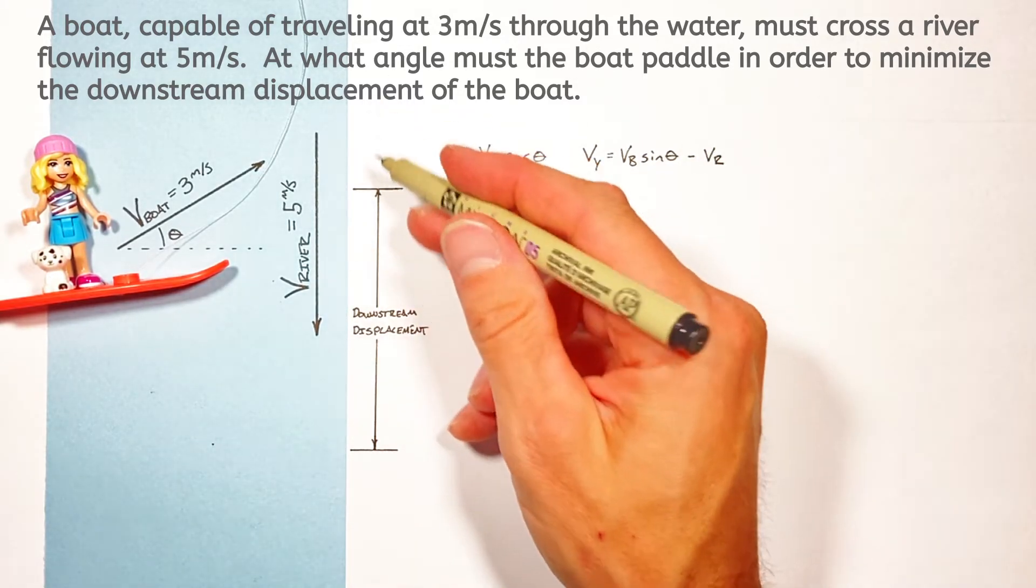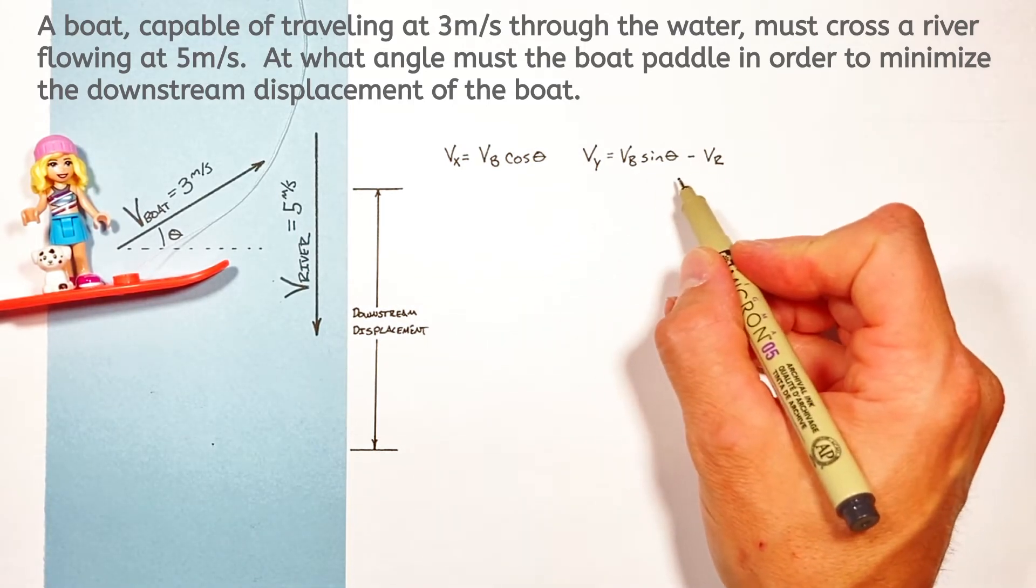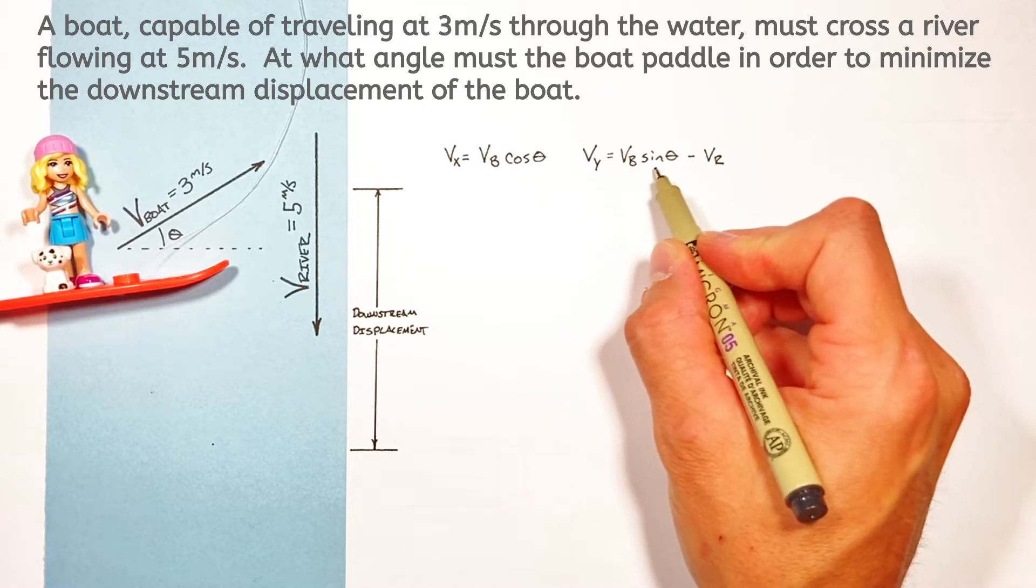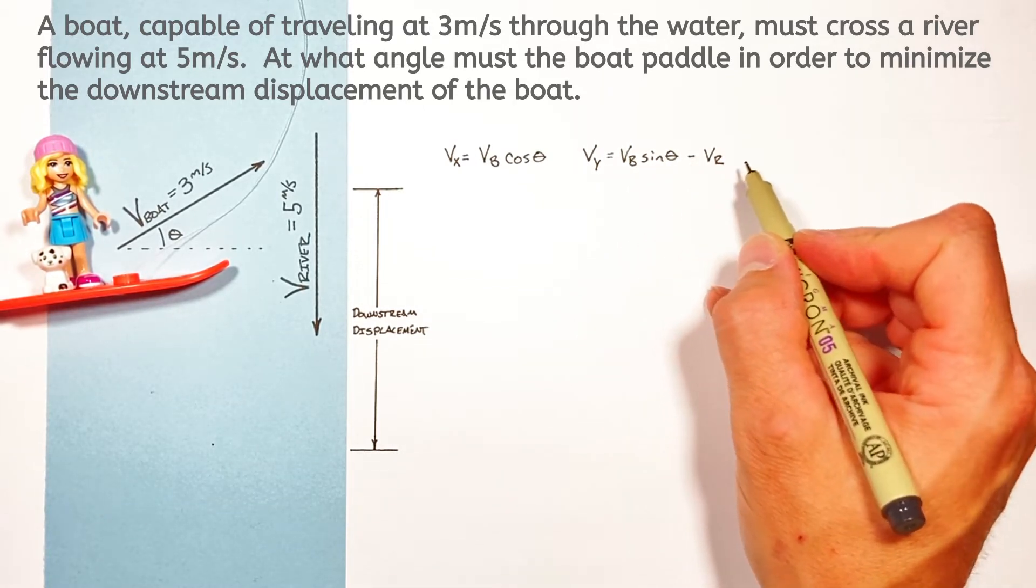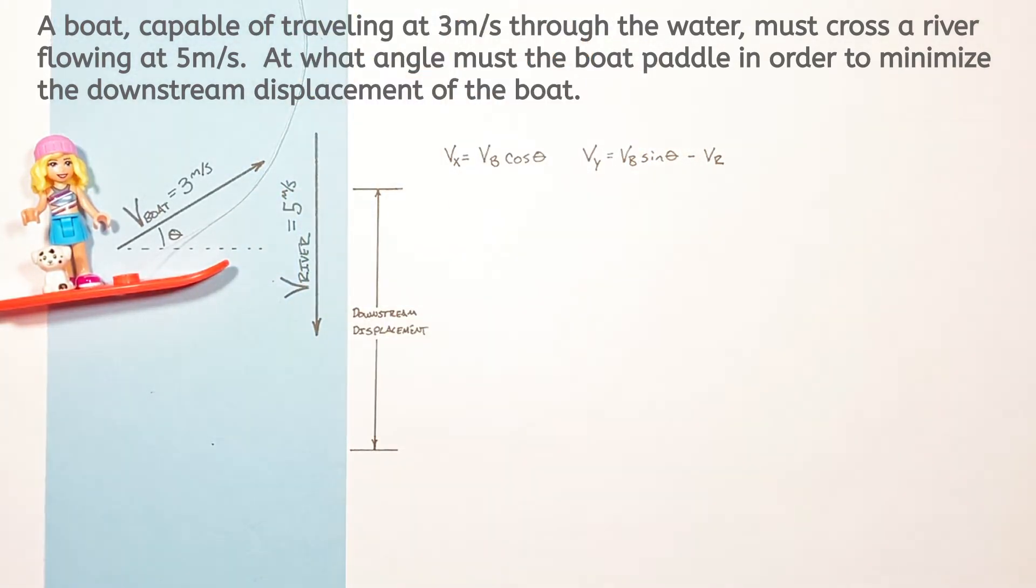Now whether you choose to call upstream or downstream positive is irrelevant and I'll show you why in the math later on. But the important part to recognize here is that the velocity of the boat or its vertical component needs to have the opposite sign of the velocity of the river. The boat's trying to go upstream and the stream is of course going downstream.